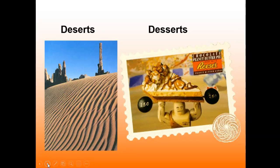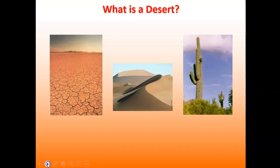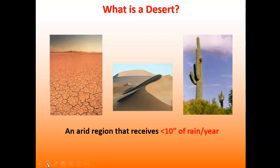When we think of deserts, hopefully we're thinking of the image on the left and not the image on the right. We want to establish a definition: the number one factor — really the only thing we care about — is that an area receiving less than 10 inches of rainfall a year can be considered a desert. We can associate other factors to areas with this condition.